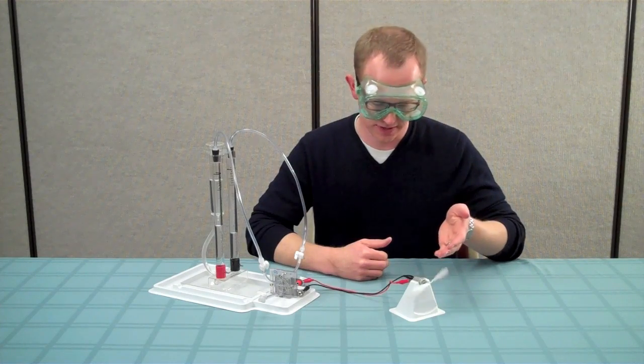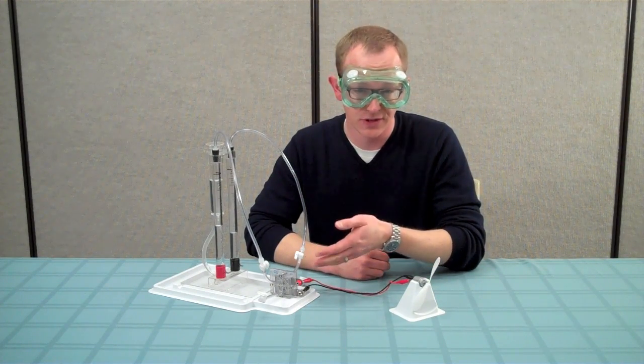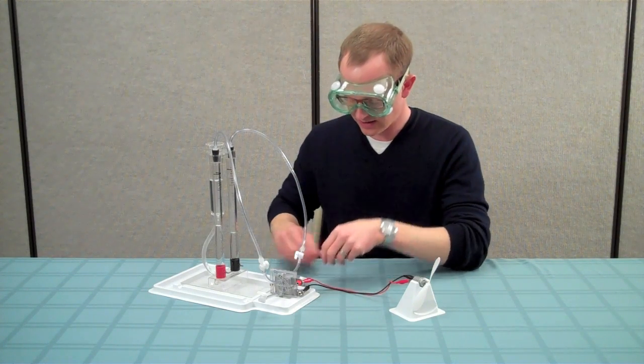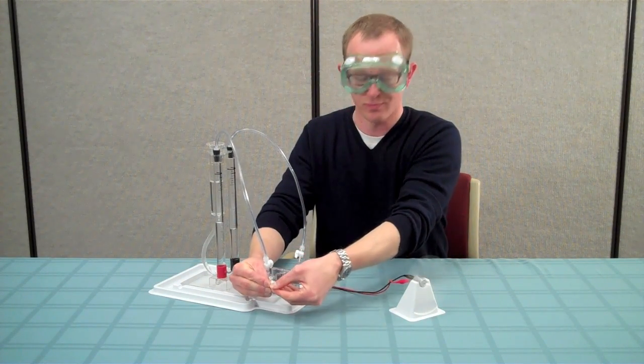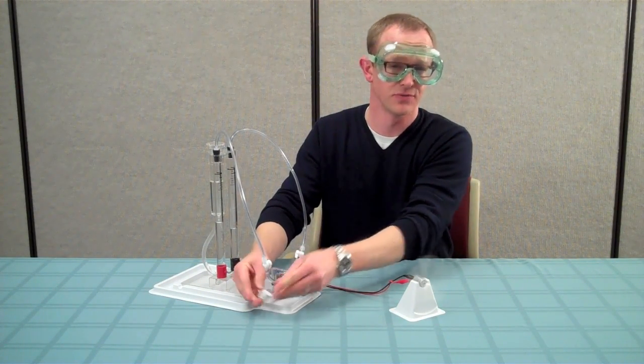If the electric motor starts to slow down, or the voltage across the fuel cell begins to decrease, you may need to give both purge valves a quick half turn. You may need to do this several times while running the fuel cell.